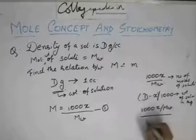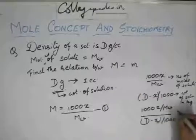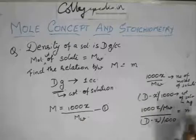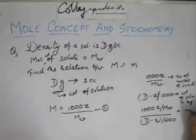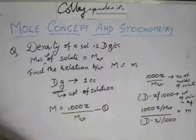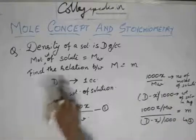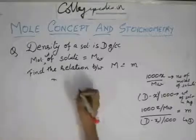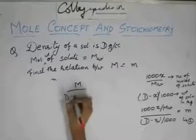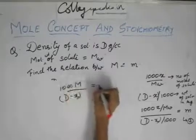So this divided by d minus x by 1000 will give you m. Now, this 1000x by mw you can directly replace as m from equation 1 in equation 2. So this would be m divided by d minus x by 1000, so this would go up, will be equal to m.